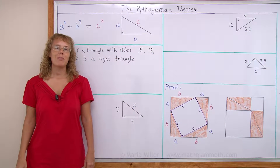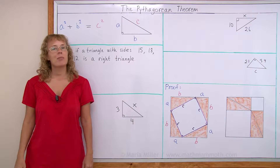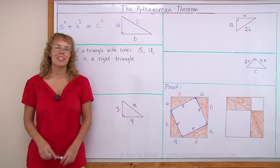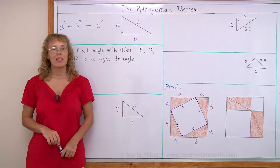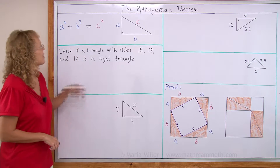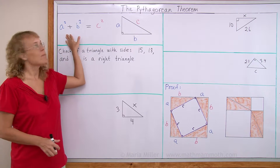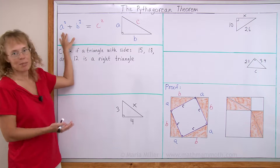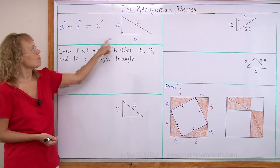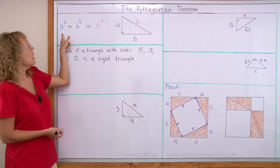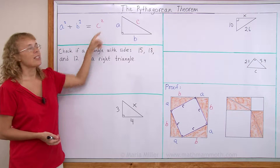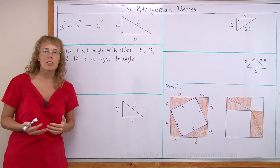Hello, my name is Maria Miller from MathMammoth.com. In this lesson we are going to study the Pythagorean Theorem. This is the Pythagorean Theorem — it looks pretty simple. It states that in a right triangle, a squared plus b squared equals c squared. It's a very famous theorem.